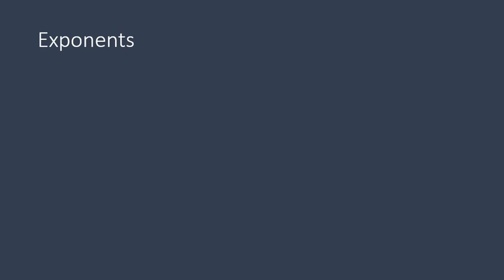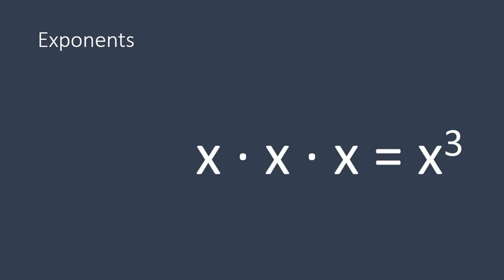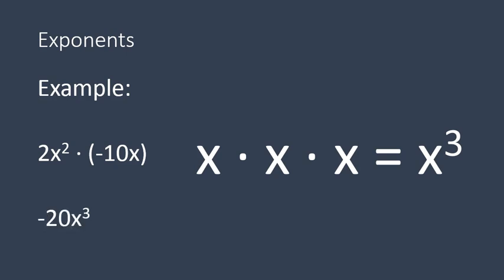One more example of exponents: x times x times x gives us x to the power of 3. So let's look at an example of that type of question. If I had 2x squared times negative 10x, remember 2x squared means 2 times x times x — that's our first term. And we're multiplying that times negative 10 times x. In the end, we're going to have 3 x's when we're multiplying. Our numbers: 2 times negative 10 gives us negative 20. And our variable is x squared times x, or in other words x times x times x, which gives us x to the power of 3.